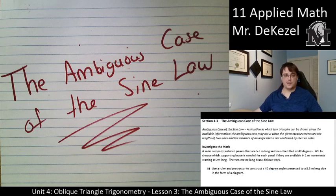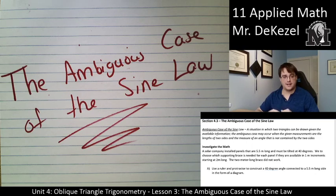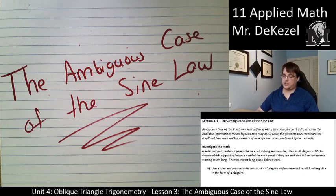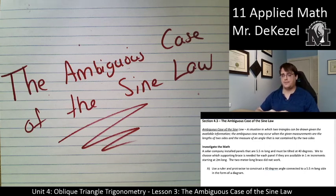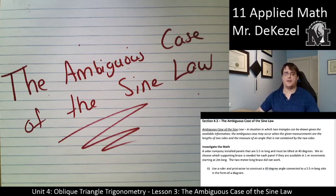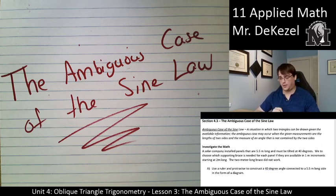Hello math class. Welcome back to another lecture. We have lesson three today of unit four: the ambiguous case of the sine law. We are going to be talking about cases in which we don't know whether we have an acute or an obtuse triangle, and therefore we will sometimes have to do both situations. I'll show you how to find out if there is one solution, two solutions, or sometimes no solutions to the problem.